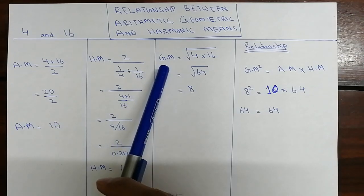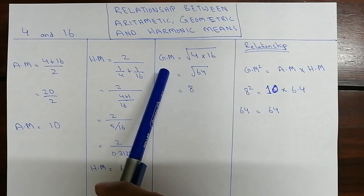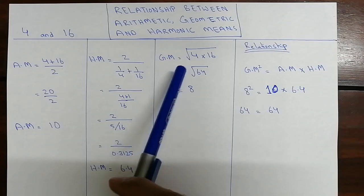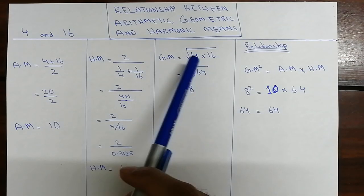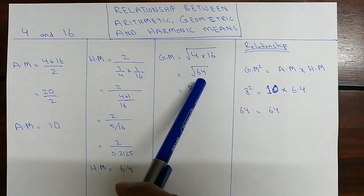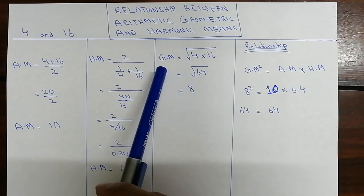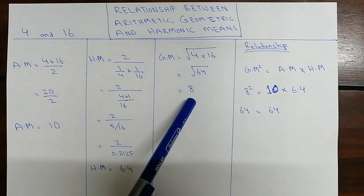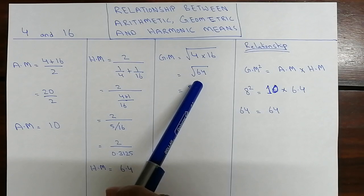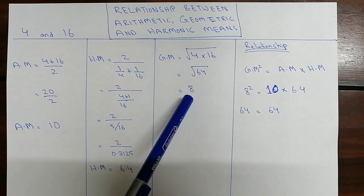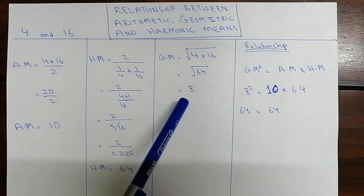After that, we take the geometric mean. We simply multiply the two numbers and take the square root: √(4 × 16) = √64. The geometric mean is 8, since √64 = 8.